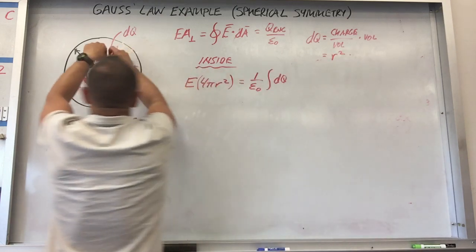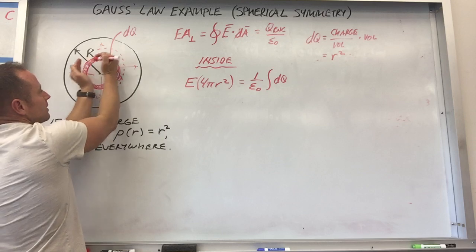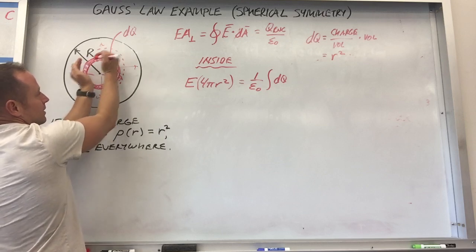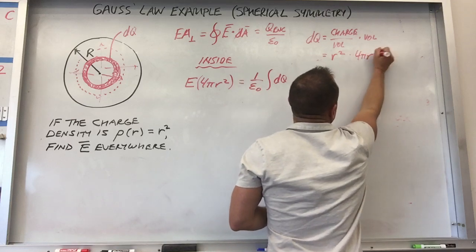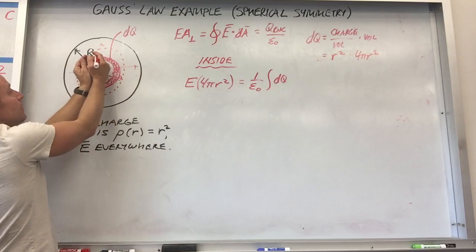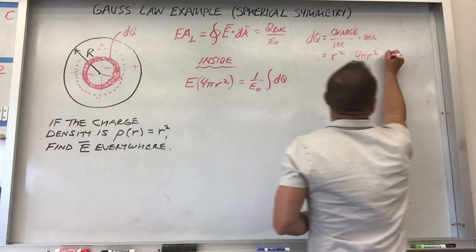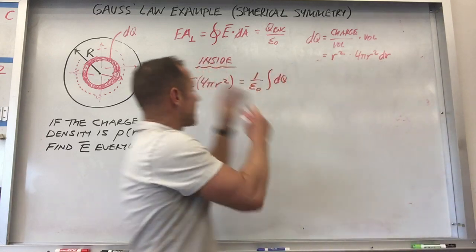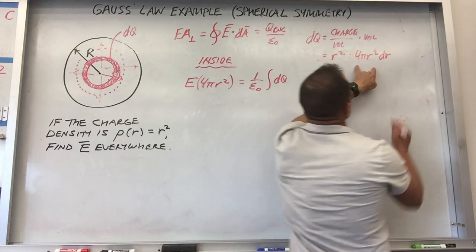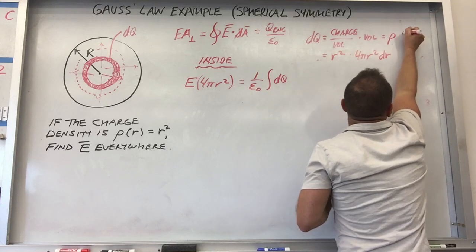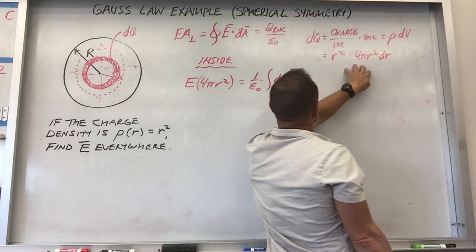The volume is the volume of this infinitely thin shell: the area of the shell times its thickness. The area is 4π times little r squared, and the thickness is a little excursion in the radial coordinate, dr. So dQ equals r² times 4πr² dr, which is 4πr⁴ dr. As long as there's no angular dependence, you can use this as your volume element dV. In general, charge equals charge per volume (rho) times dV.